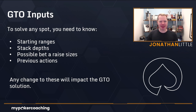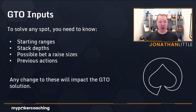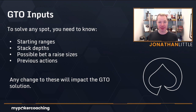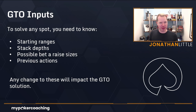Let's discuss GTO inputs. Whenever you are studying GTO, you're going to be using a GTO solver. In order to solve any poker scenario, you need to know a few things. First, you need to know the starting ranges — which hands do people start with? With GTO solvers, you can actually adjust the starting ranges based on what your opponent is doing, or at least what you think they're doing. And maybe you don't play the perfect GTO preflop strategy, so you can adjust that a little bit, and this will start to give you different outputs than the perfect GTO versus perfect GTO strategy.